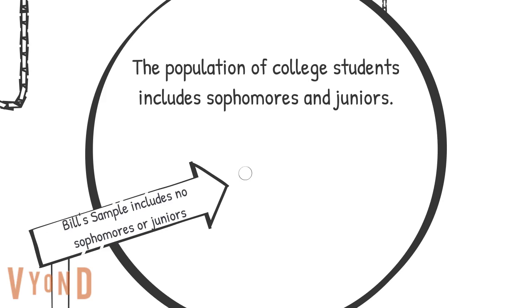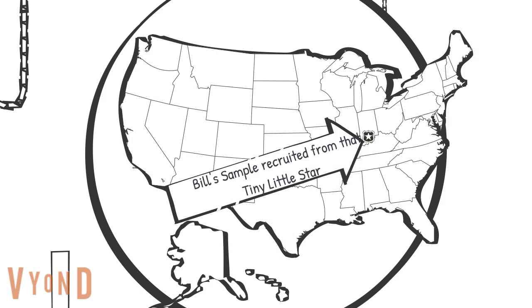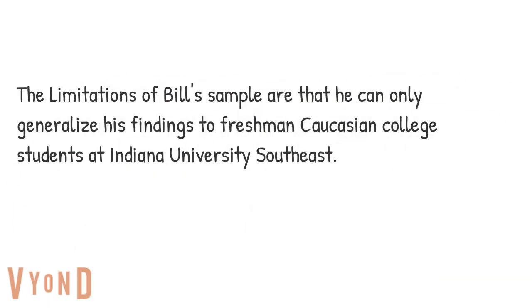The population of college students also includes sophomores and juniors — not just freshmen and seniors. Bill's sample has no sophomores or juniors, so it wouldn't be a representative sample of all college students. Additionally, Bill recruited only from one small school in a suburban area — Indiana University Southeast — and nowhere else. Dr. Smith advises Bill that his findings are limited to freshman Caucasian college students at Indiana University Southeast, which is what studies refer to when they discuss limitations.